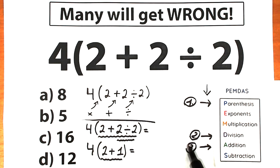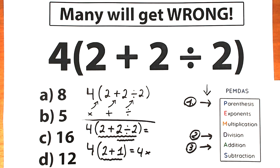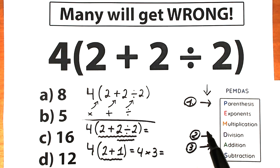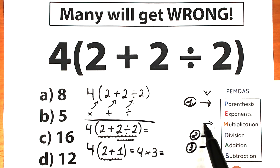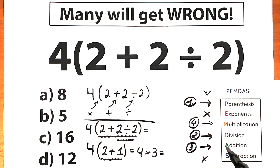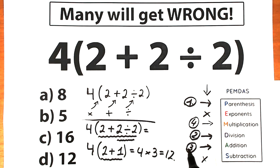So we have 2 plus 1, which equals 3. That gives us 4 times 3. We have now completed the inside of the parenthesis — we did division first, then addition. Our last step is multiplication: 4 times 3. We don't have exponents or subtraction, so this completes our solution according to the PEMDAS order of operations.